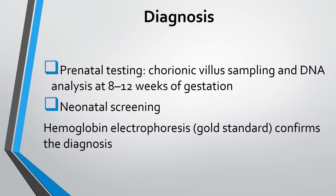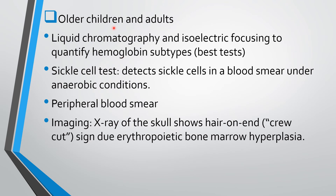So far we have seen the clinical manifestation — a very important question in the university examination for nursing students, with several MCQs asked in staff nurse examinations. Coming to diagnosis: it can be diagnosed prenatally by chorionic villus sampling and DNA analysis at 8–12 weeks of pregnancy. Neonates can be identified by hemoglobin electrophoresis, which is the gold standard to confirm sickle cell anemia in neonates. For older children and adults: liquid chromatography, isoelectric focusing, sickle cell test, peripheral blood smear, and X-ray of the skull showing hair-on-end appearance or crew cut sign.